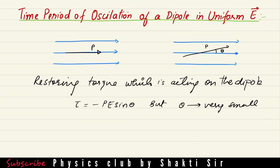Since theta is very small, sin θ can be approximated as θ. We give a small tilt to the dipole so that it will oscillate. When the torque acts on the dipole, it tries to bring it back to the initial position, but due to the moment of inertia, it will move in the other direction.